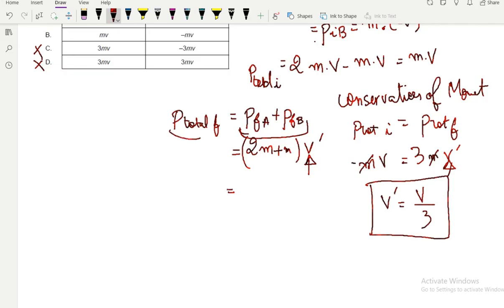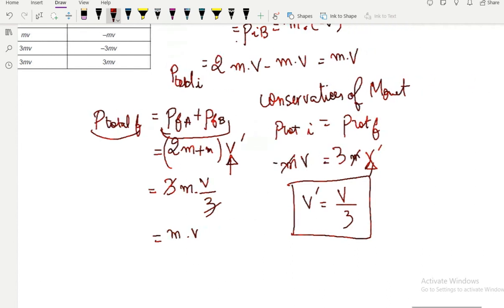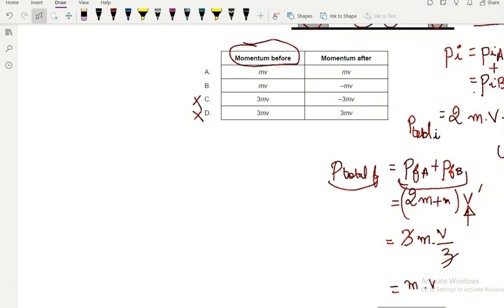Which means that the final momentum will be 3M times V divided by 3, so they're gonna cancel out. The final momentum is also M times V, and the right answer must be A.